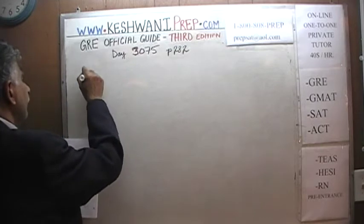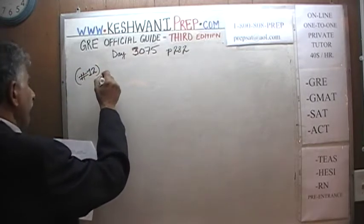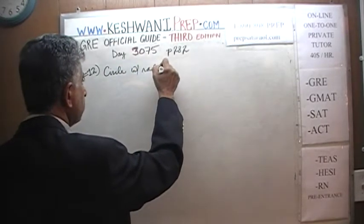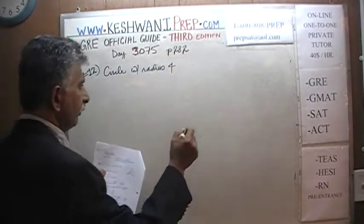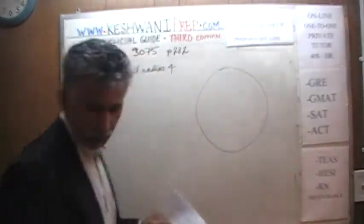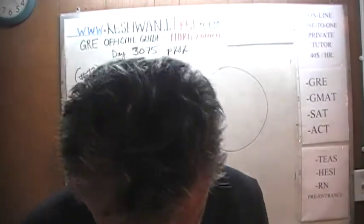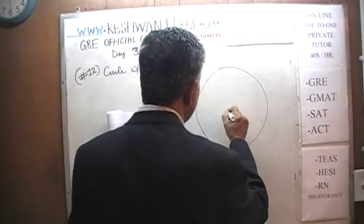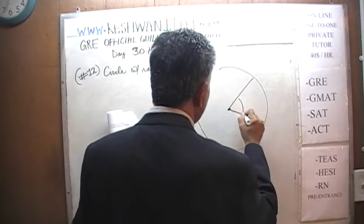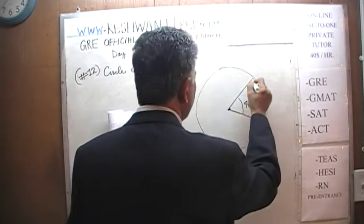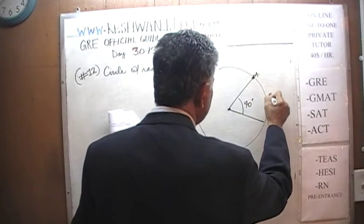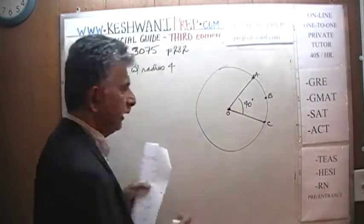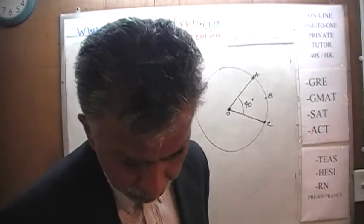Number 12 looks something like this. We are told that we have a circle with radius 4. So let's draw a circle. And we are given a little slice — a slice of 40 degrees. Here is our center, and let's draw a slice of 40 degrees. That looks like 40 degrees to me. And we have an arc here, arc ABC. This is center O that we are told — center is located at point O. And that's all we have.